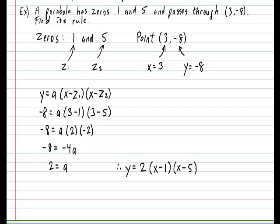And there you have it. This is the rule in factored form for the parabola with the zeros 1 and 5 and passing through the point (3, -8). As you can see, it's an extremely simple procedure. Thank you.